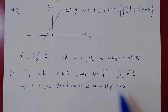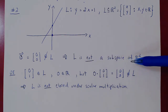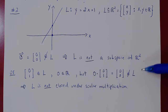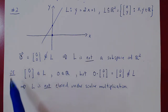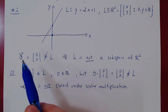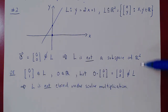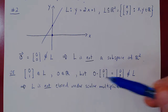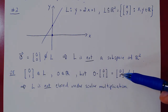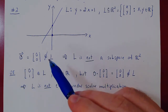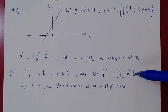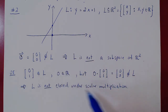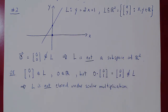As soon as one axiom is not satisfied, the set is not a vector space. Therefore L is not a subspace of R2. If a set is closed under scalar multiplication, it must contain the zero vector, because any vector times the real number 0 is the zero vector. Since the zero vector is not an element of this space, it is not closed under scalar multiplication and therefore not a subspace of R2.